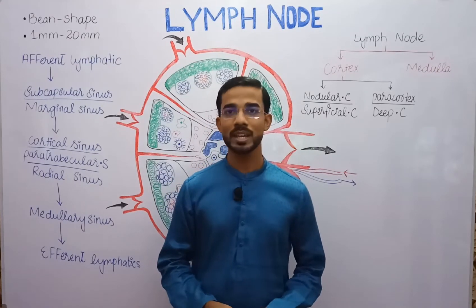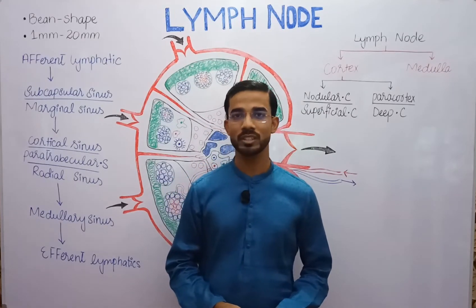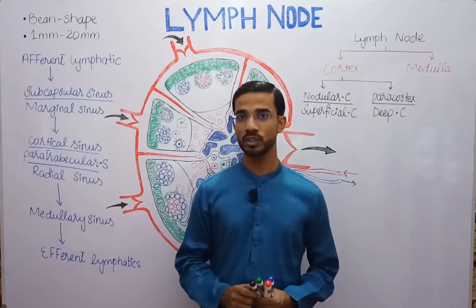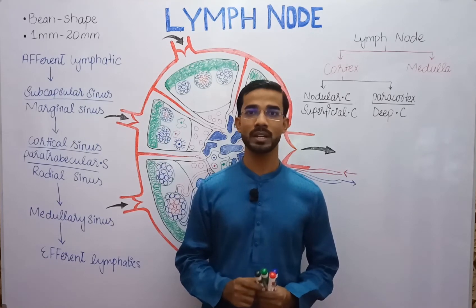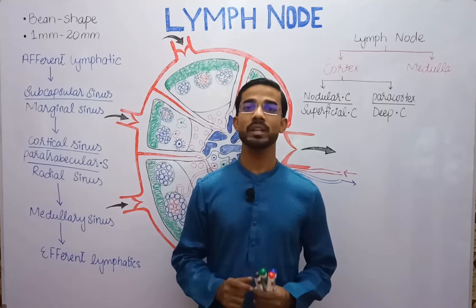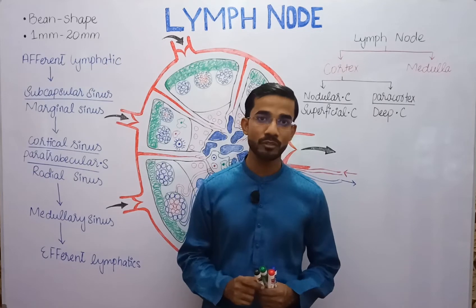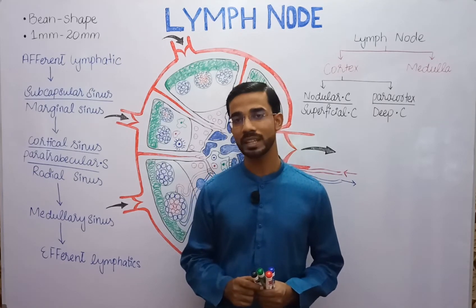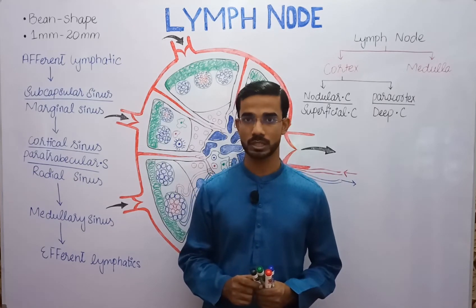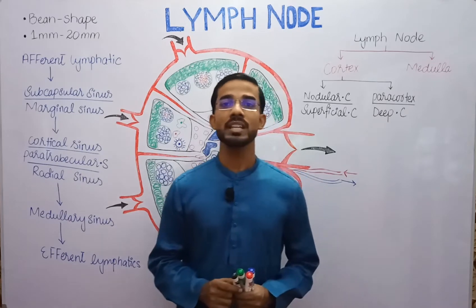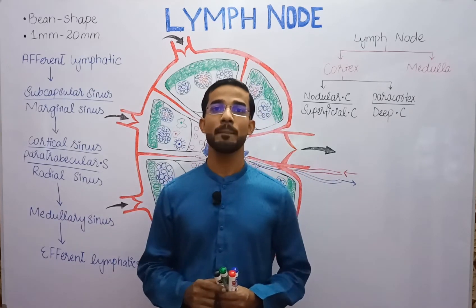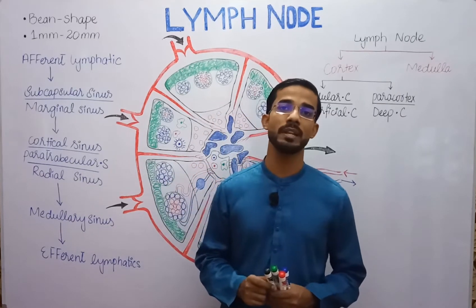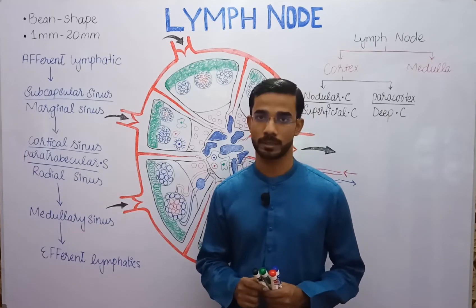Welcome to Matlacto. Today we are going to discuss lymph nodes. After watching this video, you will be able to understand what components are present in the lymph nodes and how lymph nodes work in the lymphatic system. A lymph node is basically a bean-shaped structure, with a size of 1 millimeter to 20 millimeters.